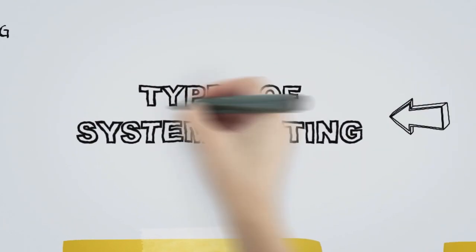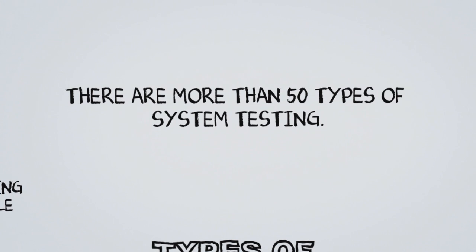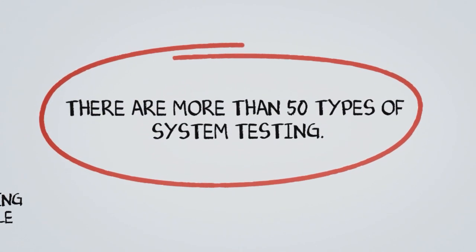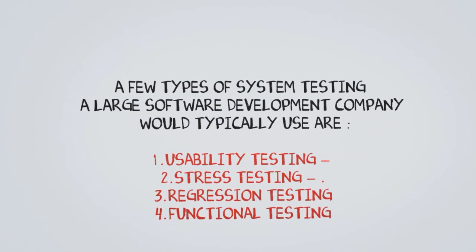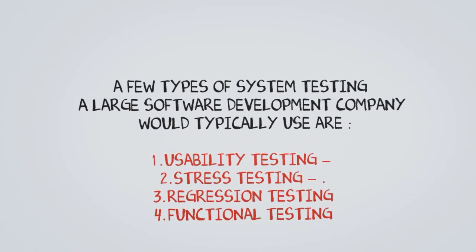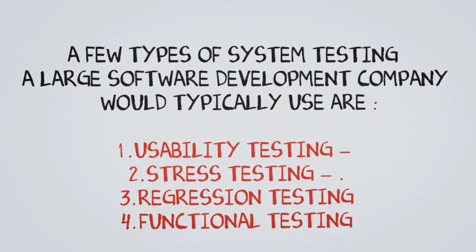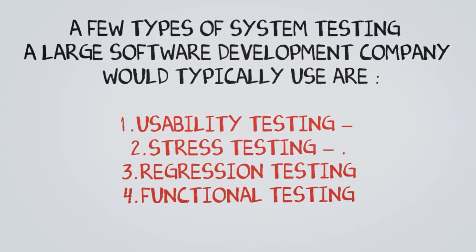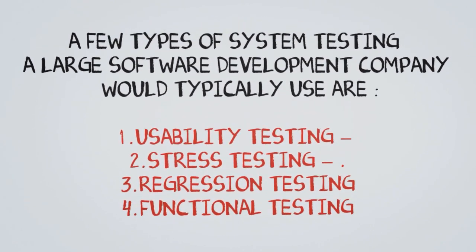Types of system testing: There are more than 50 types of system testing. A few types of system testing a large software development company would typically use are usability testing, stress testing, regression testing, and functional testing.